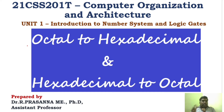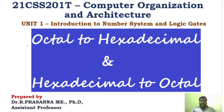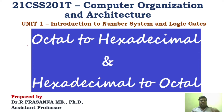So far we have seen a lot of conversions like we started with radix to decimal, decimal to any radix, and then binary to octal, octal to binary, hexadecimal to binary, and binary to hexadecimal. And today we are going to see octal to hexadecimal conversion and vice versa. All the number system conversions are very simple steps — all you have to do is remember the logic for each and every conversion.